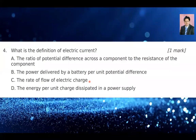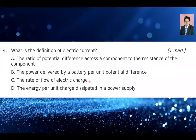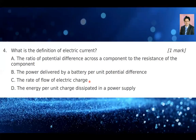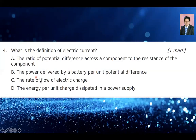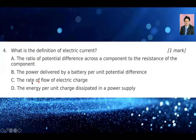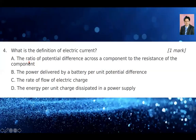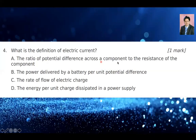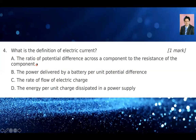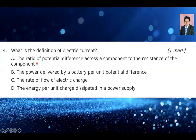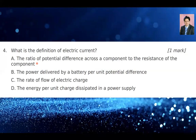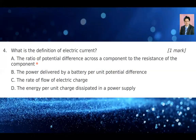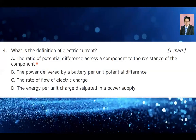Let's go over question number four. They are asking: what is the definition of electric current? Electric current is the rate of flow of charge. Option B is the ratio of potential difference across a component to the resistance — V over R. In fact, V = IR and I = V/R, so this follows Ohm's law and could be a mathematical formula for electric current. Option C is the power delivered by a battery per unit potential difference. Power is voltage times current, so power divided by voltage equals current — mathematically correct.